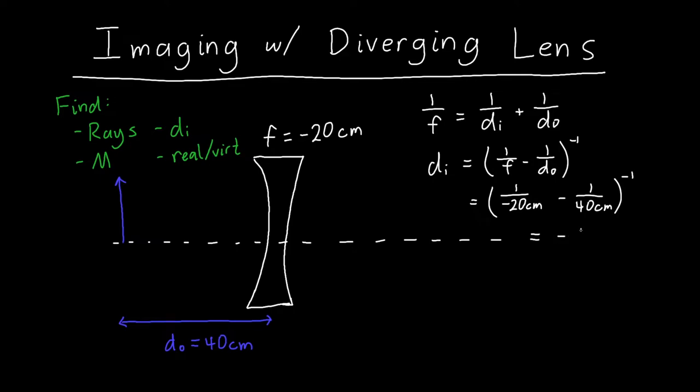Once you simplify this you'll find that di is negative 40 over 3 centimeters. Because this is a negative image length, that means the image is going to be located to the left of the lens - it's going to be a virtual image, not a real image.